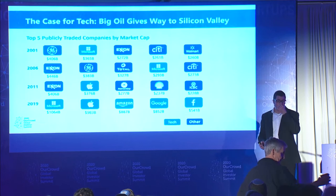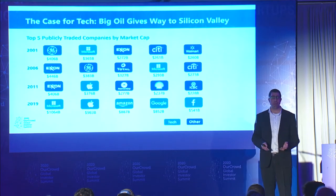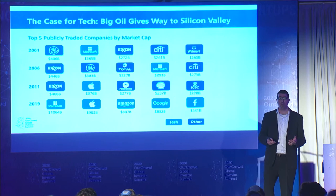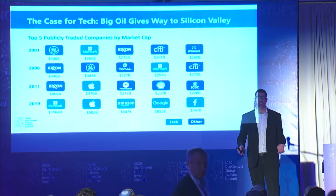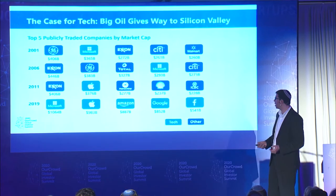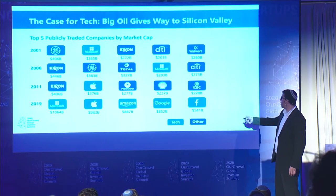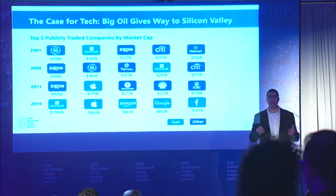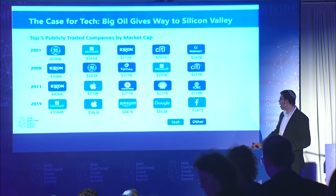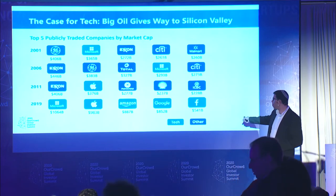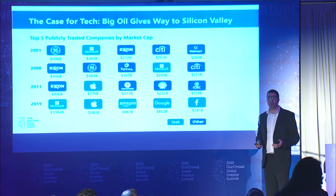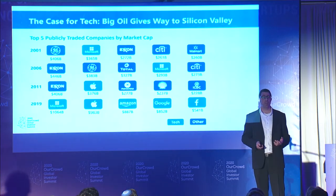Why are we here today looking at startups and early stage companies when there are active markets out there — brokers, public stocks, more traditional industries, established companies with track records? The truth is the world has changed. If you go back 20 years ago, traditional industries really were dominating the markets. Fast forward to today, and that's completely changed. It's really only the technology companies — Uber, Alibaba, WeWork — that are starting to dominate the space. Technology seems to be eating everything.